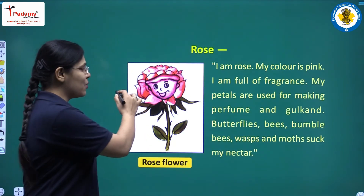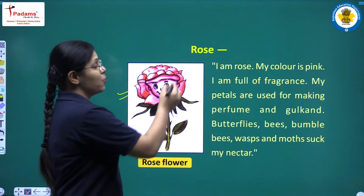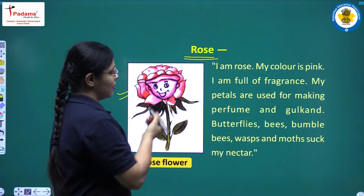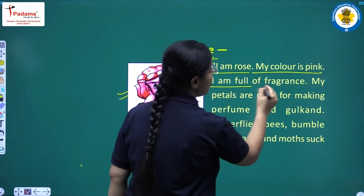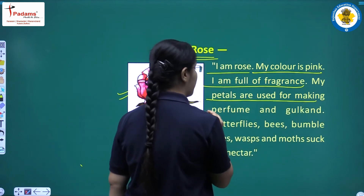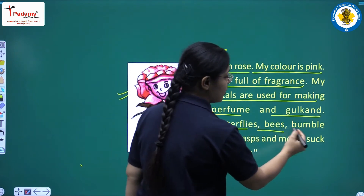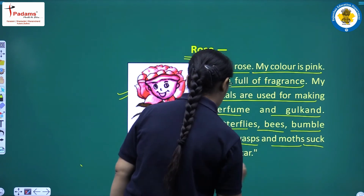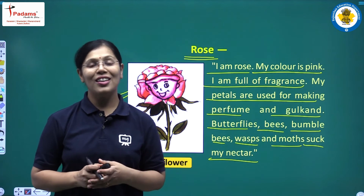Khushi asked the rose flower, 'Who are you?' and the rose flower replied. It said: I am rose, my colour is pink. I am full of fragrance. My petals are used for making perfume and gulkand. Butterflies, bees, bumblebees, wasps and moths suck my nectar. So the rose flower gave its introduction.